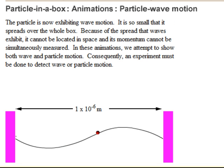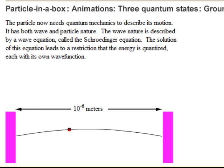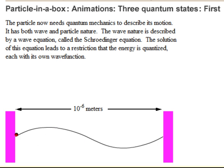A quantum particle in a small box has particle and wave properties. Here we show three states of a quantum particle in a box. Note that it has both wave and particle properties.